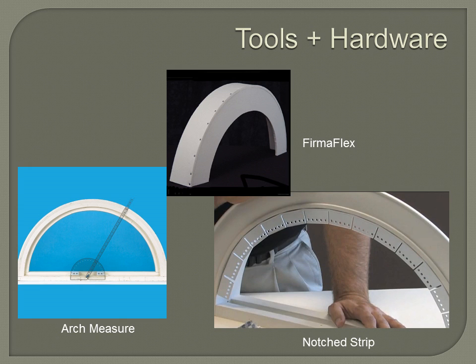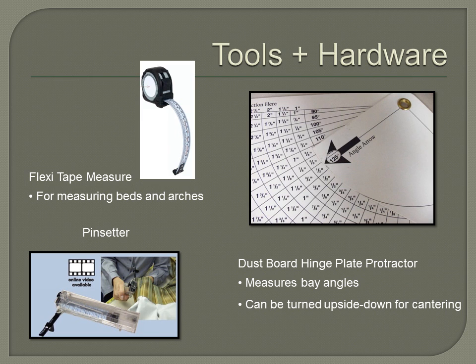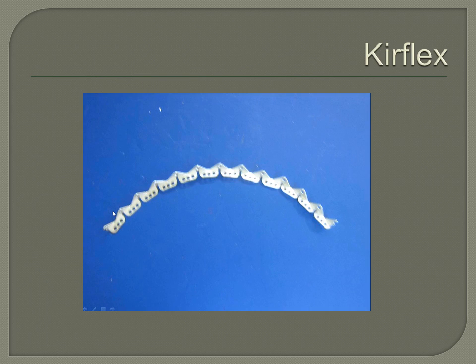The notch strip from RH Roley can be velcroed or unvelcroed — the notches are where your drapery pin goes, so you can mount a treatment right into the arch. The Flexi tape measure is great for getting measurements of arches and also for measuring bed coverings. The dust board hinge plate protector measures bay angles and arches, and when turned upside down is great for cantering.